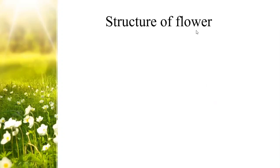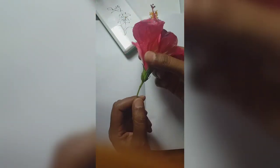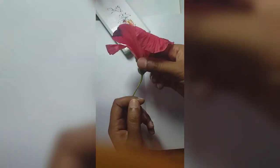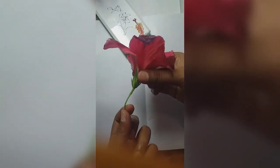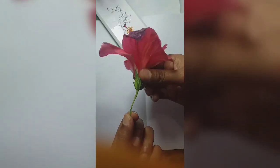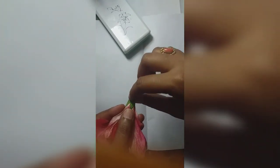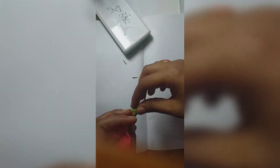Look at this - this is a China rose, or hibiscus flower. We are going to study the structure of this hibiscus flower. We will study the flower stalk here - the pedicel, the tip of the pedicel, and inside the thalamus where we are going to find the flower. This is the thalamus structure. This structure here is the epicalyx.